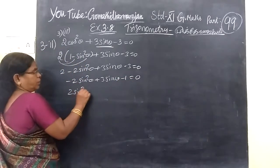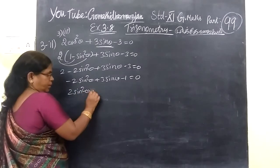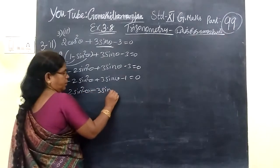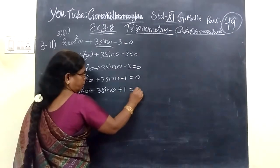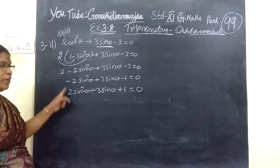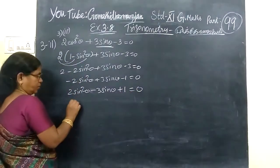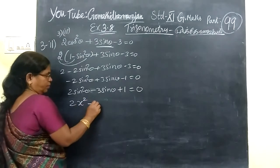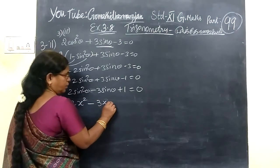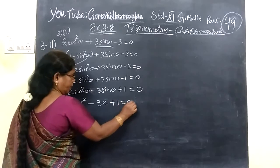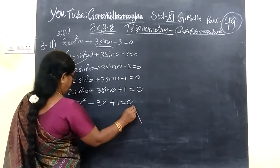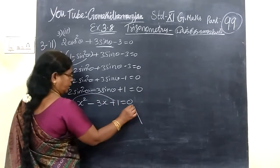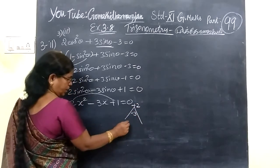So 2 sin squared theta minus 3 sin theta plus 1 equal to 0. Minus 1 plus 1 equal to 0. So 2 sin squared minus 3s plus 1 equal to 0. Multiply, you are getting plus 2, add minus 3.